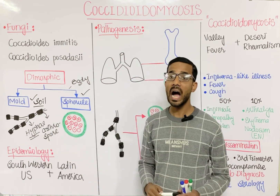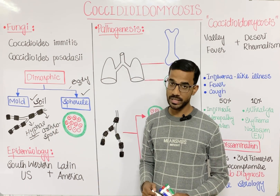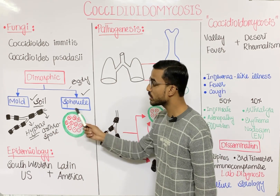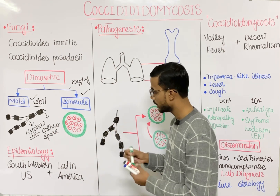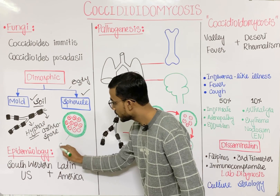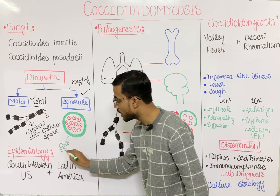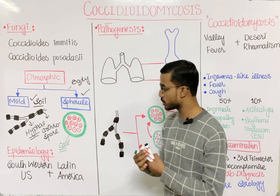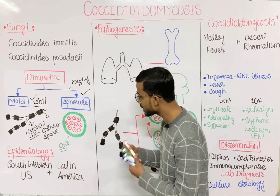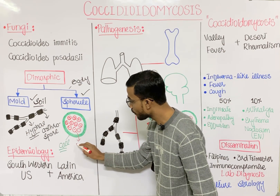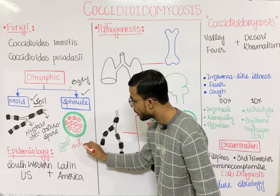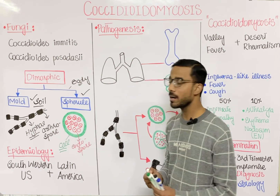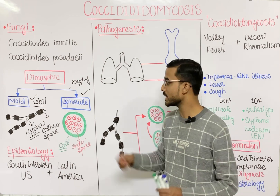In the spherule form, you will see a thick wall. Inside the spherule, you will see endospores — a large number of endospores present within the spherule. So these are the two most important forms: mold and spherule.